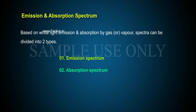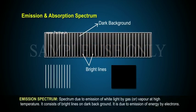The two types are: 1. Emission spectrum, and 2. Absorption spectrum. Emission Spectrum is the spectrum due to emission of white light by gas or vapor at high temperature. It consists of bright lines on a dark background.